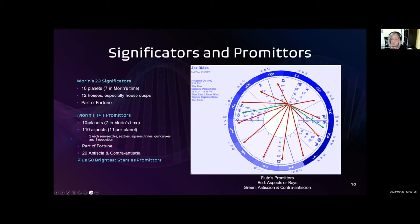The rays on this diagram are shown for Pluto. It has two semi-sextiles, two sextiles, two trines, two squares, and two quincunxes, one opposition. And it has the antiscion and contra-antiscion. So, and that's just for one planet.